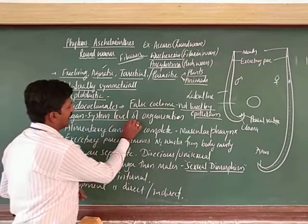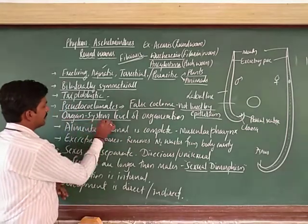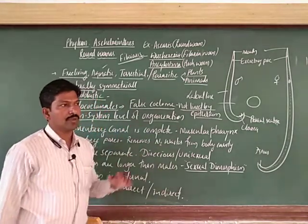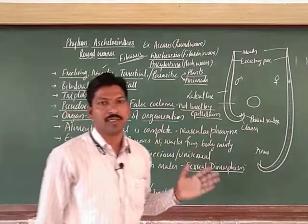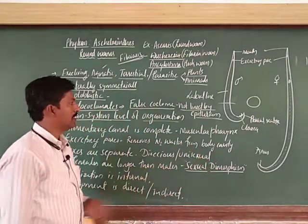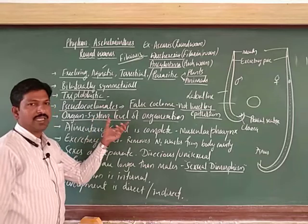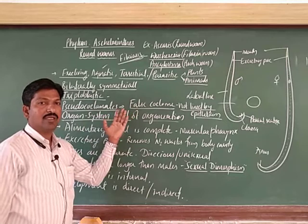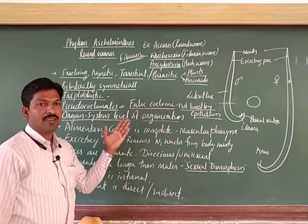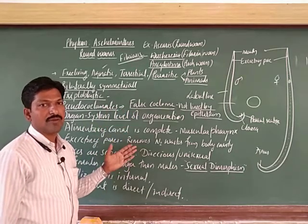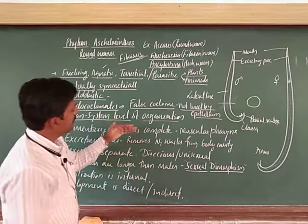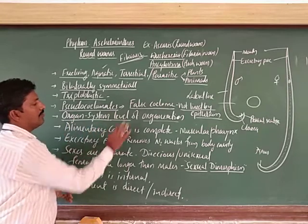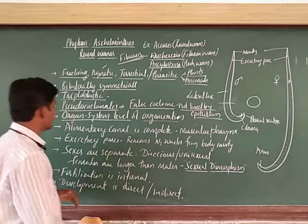The organ system level of organization is observed in these members. These are higher animals compared to the previous phyla, because organ system level is advanced here. Organ level was observed in Platyhelminthes, and tissue level before that. Organ system level of organization is what we observe in these cases.